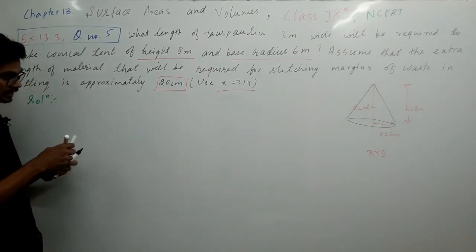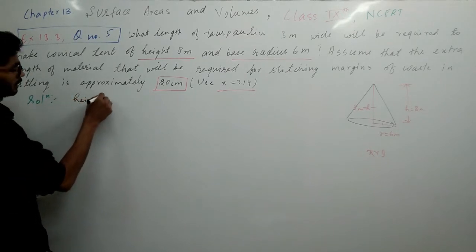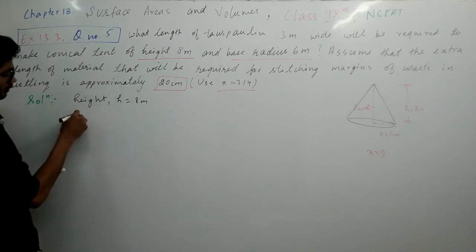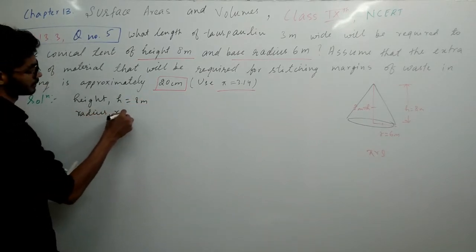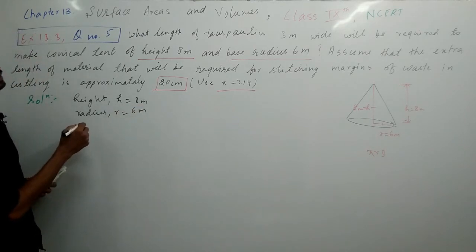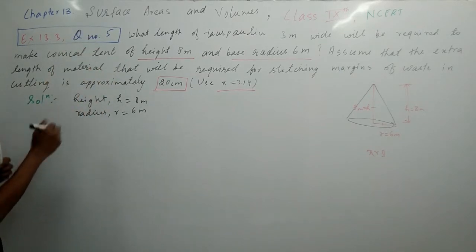The height, the value of it is 8 meter. Radius, the value of it is 6 meter. First we need to find the slant height.